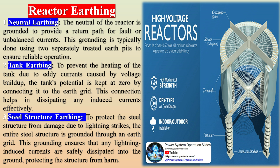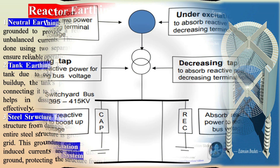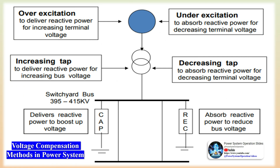Neutral grounding reactors are connected to the neutral of a transformer or generator to limit ground fault currents. Based on design: air core reactors have coils wound on a non-magnetic core and are typically used for low-voltage applications. Iron core reactors have coils wound on a laminated iron core, providing higher inductance, and are used for higher voltage applications.